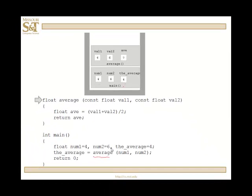So what comes into existence? Val1, val2, and av. They all are in existence, as you can see. The values for val1 and val2 have been transferred from the function call. num1, it was 4; num2, its value is 6.